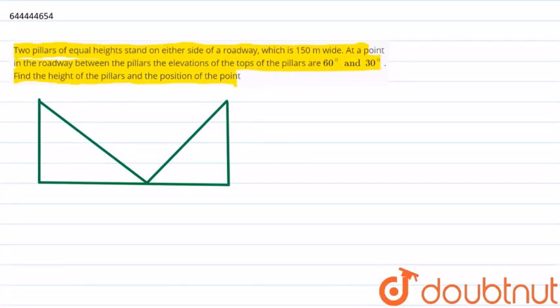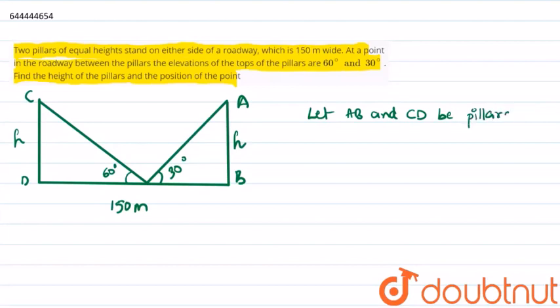Now let us create a diagram including the pillars. Two pillars have been depicted AB and CD which are 150 meters away on a roadside and are having 30 degrees and 60 degrees of elevation. Let us consider them of height h.